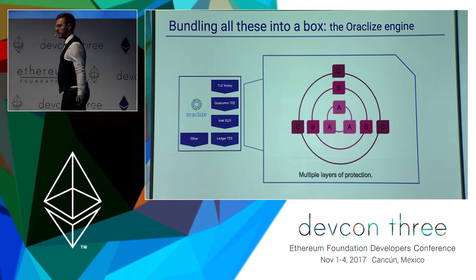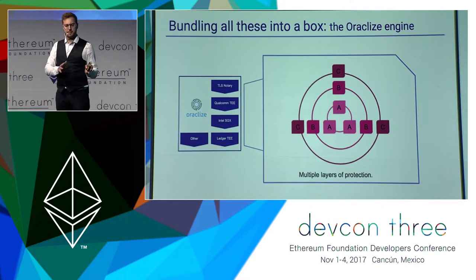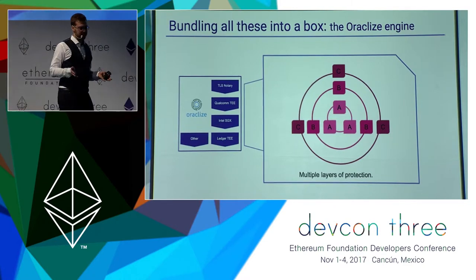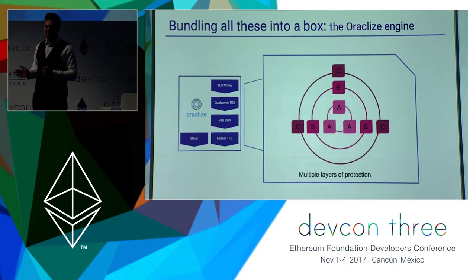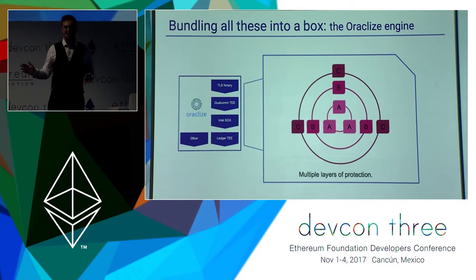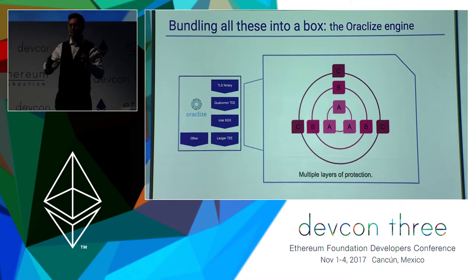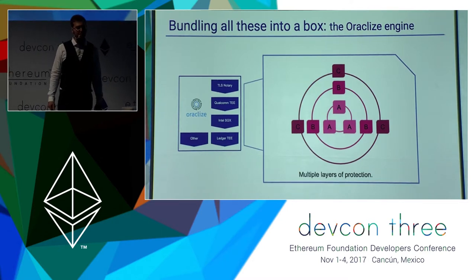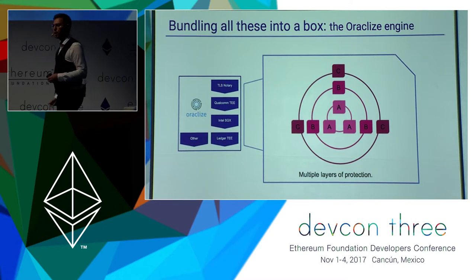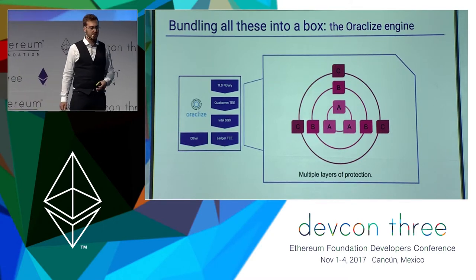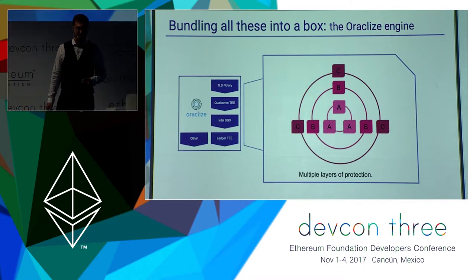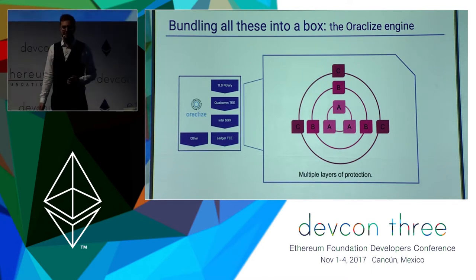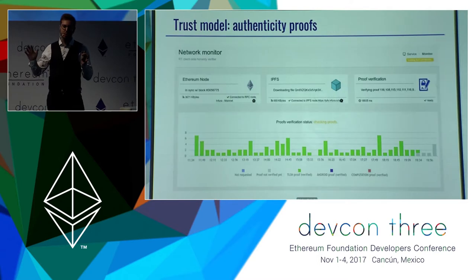This is something that today we are managing with a distributed network. Thanks to the authenticity proofs, we do not need to trust Oraclize, but we need to trust all these different attestators. The only risk of the central operator is basically that the service stops running — bad quality of service, censorship, or similar problems. This is why we are working towards delegating the management of the Oraclize engine machines to any interested parties willing to contribute to maintaining the service running, moving governance of the service away from Oraclize to a different entity.